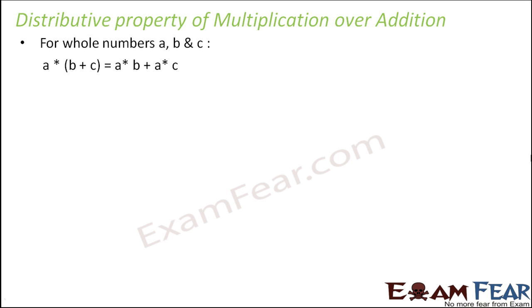This distributive property states that if we have three whole numbers a, b, c then a into b plus c is equal to a into b plus a into c. So do you understand what is getting distributed? When you have something like this, this a gets distributed to both b and c. That is why it is called distributive property.